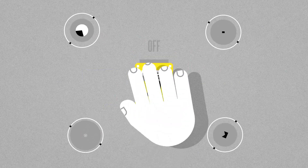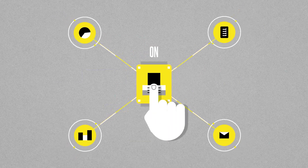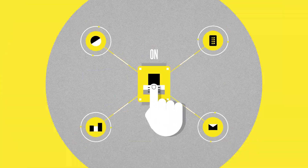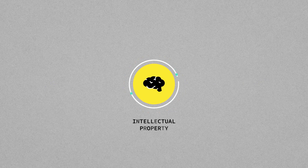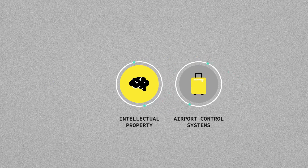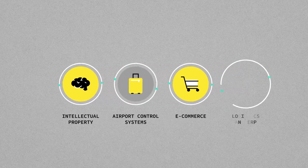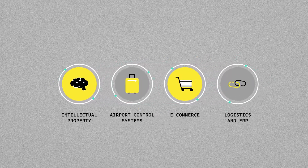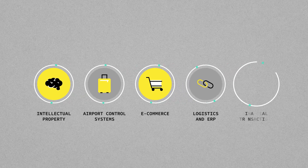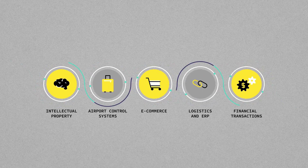Every company has systems and applications that must remain operational. They store intellectual property, keep airport control systems and e-commerce running, logistics and ERP tools working, and financial transactions possible.